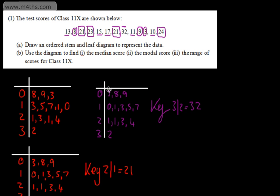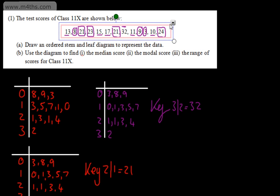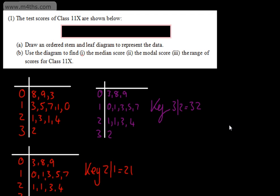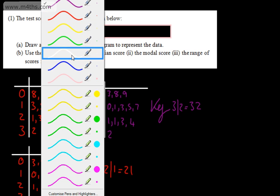In part B, we're asked to use the diagram to find the median, the mode, and the range of scores. What you would be asked to do is simply use a given stem and leaf diagram to find these values. You won't necessarily have the luxury of the original numbers — they might just give you a stem and leaf diagram and say find these values.